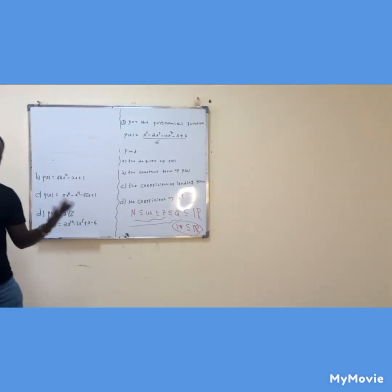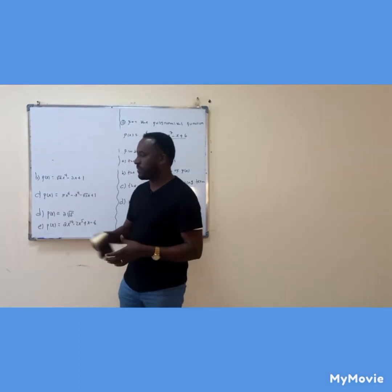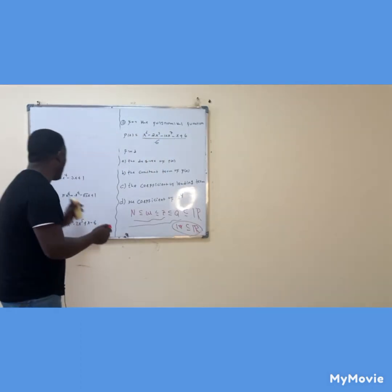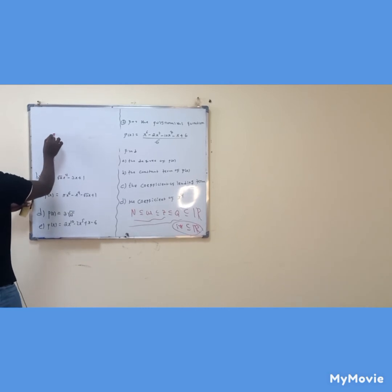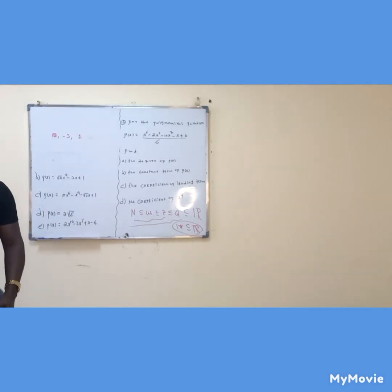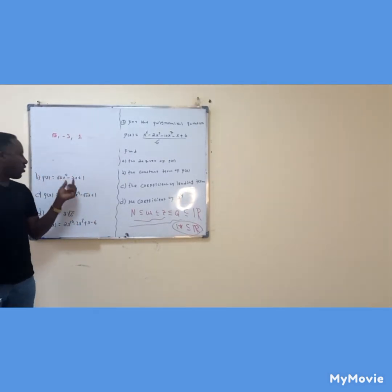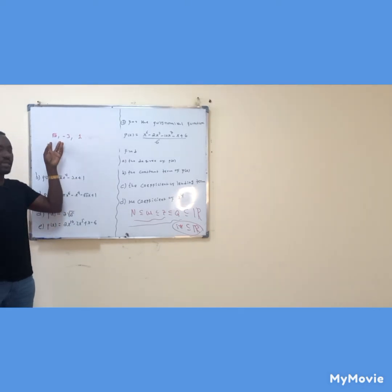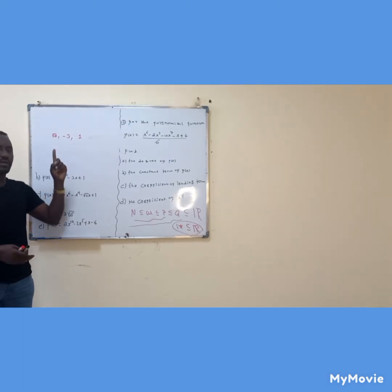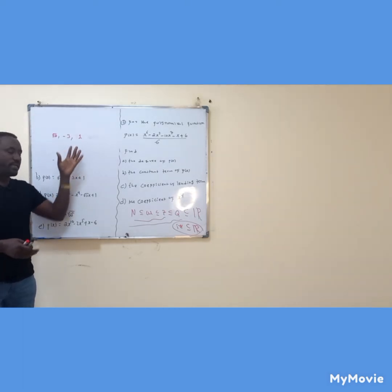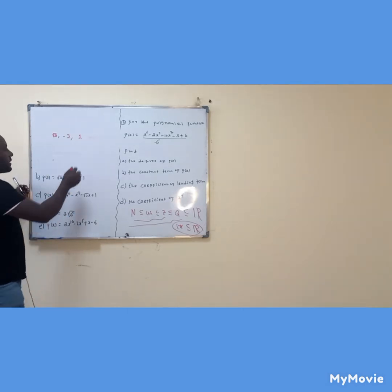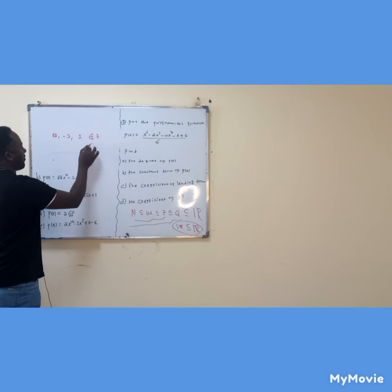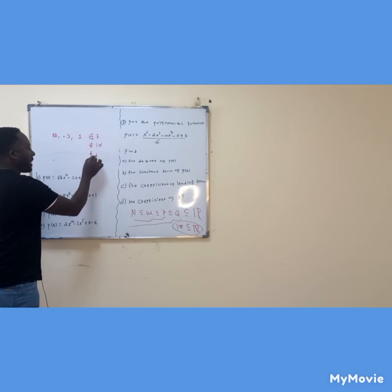What are the coefficients of this second polynomial? The coefficients of this problem are: root 2, negative 3, and 1. Here we have root 2, which is irrational, here is an integer, and here is another integer. All of these together — root 2 is irrational; the others like −3 and 1 are integers and rational.